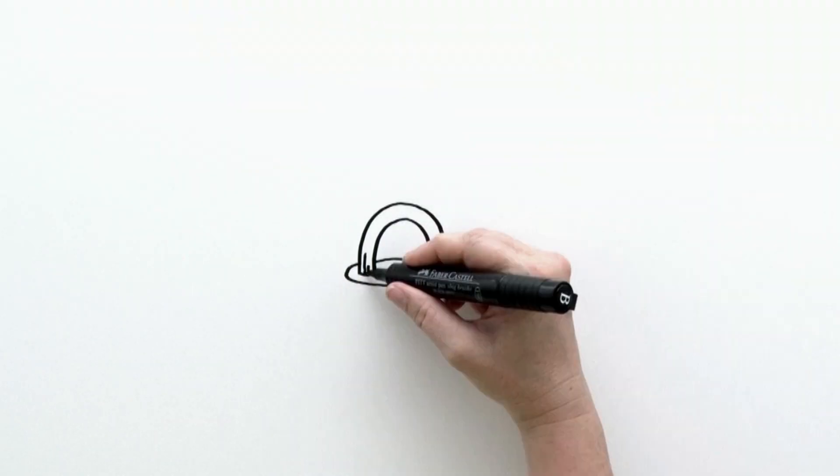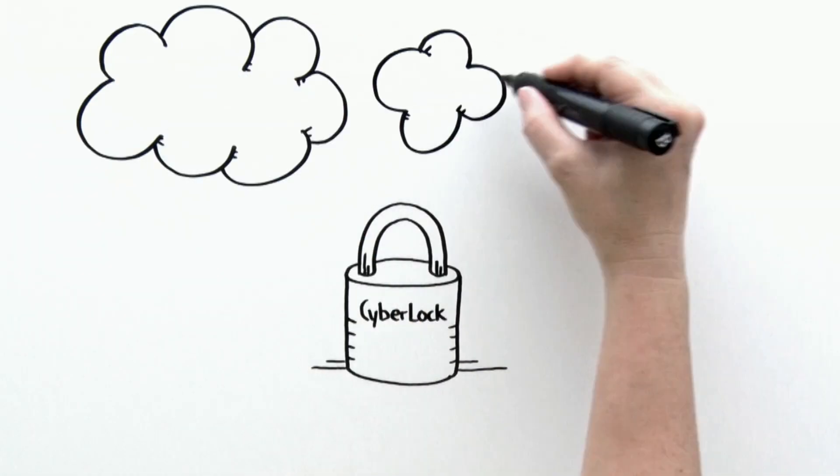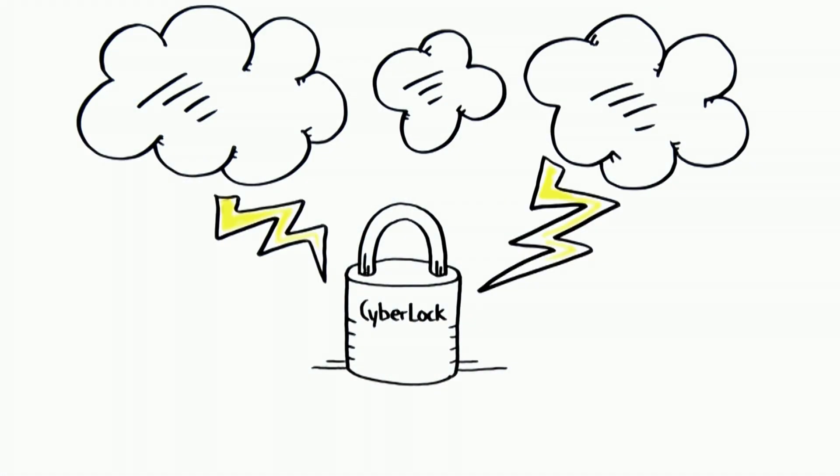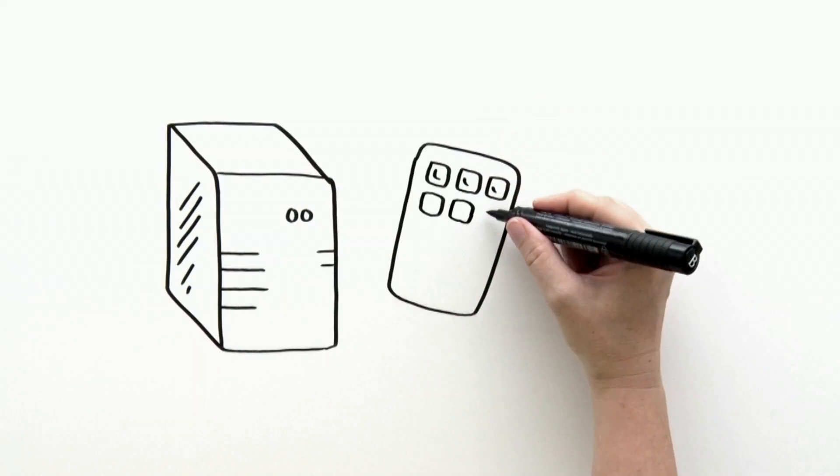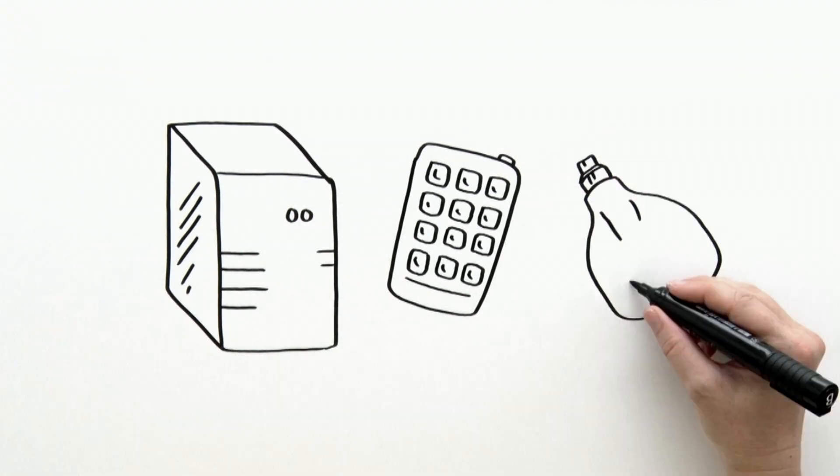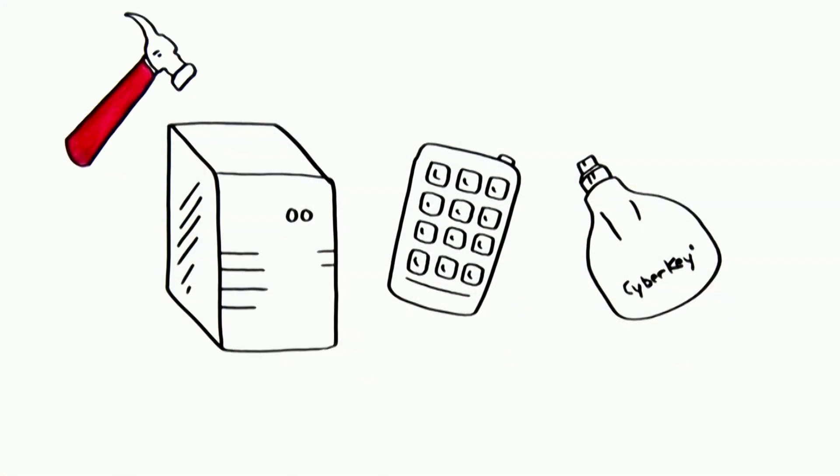He also found out that CyberLock hardware is rugged and reliable in harsh and exposed environments, like his manufacturing plant. Not only that, the CyberLock software system had triple redundant data storage, which means that CyberLock systems can withstand power and component failures.